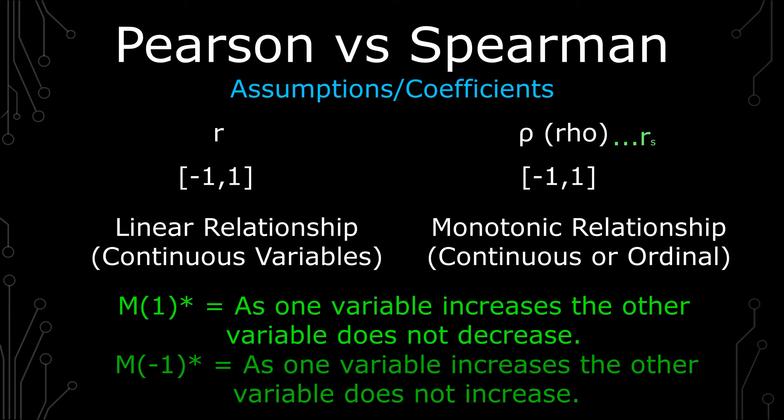Or inversely, you have, as one variable increases, the other variable never increases. And so it's really important you don't have something like a quadratic function going through there where it both increases and decreases as one variable increases, because then that shows that there isn't a monotonic relationship.